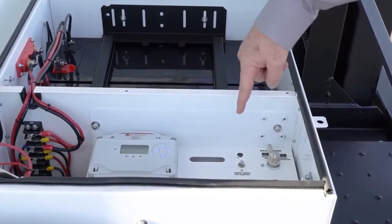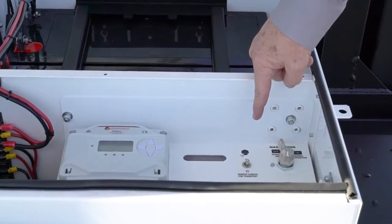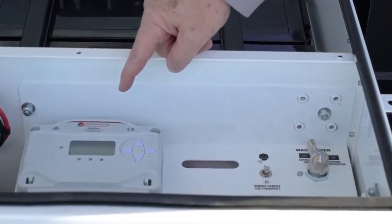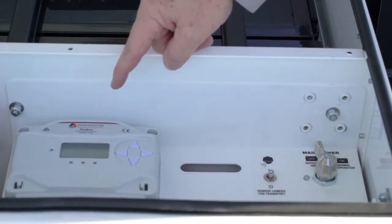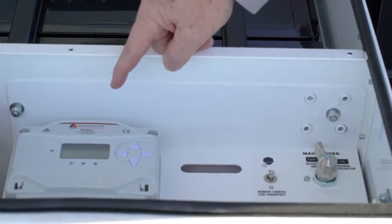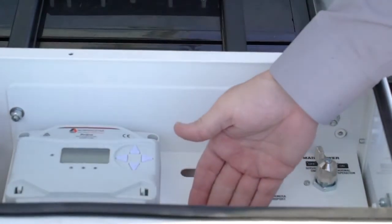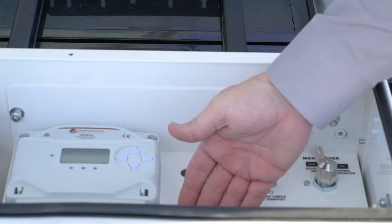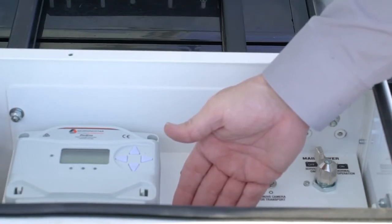A camera power switch, a solar charge controller/LVD for turning the system on and off. And underneath here is the battery charger for charging the batteries if you need to, if the solar is not keeping up.